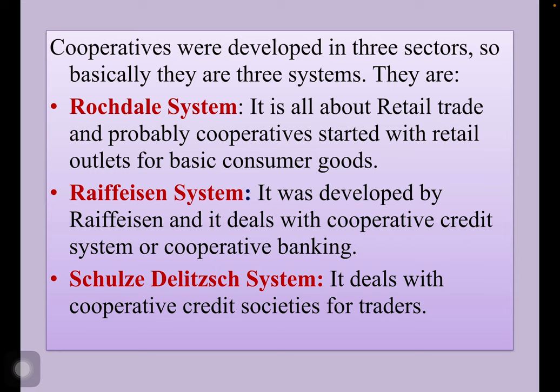Basically there are three different systems. The first is the Rochdale system — it is all about retail trade. The cooperative movement probably started with retail trade units, that is retail trade outlets especially for basic consumer goods.